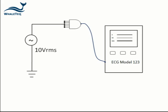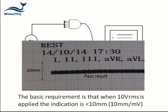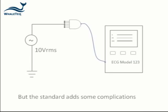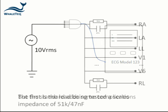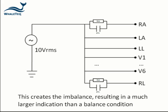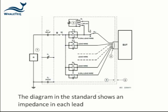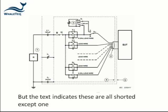The basic requirement is that when 10 volts RMS is applied, the equipment should indicate less than 10 mm with a normal sensitivity of 10 mm per mV. But the standard adds some complications. The first is that the lead electrode being tested must have a series impedance of 51k and 47 nF. This creates the imbalance and causes a much larger indication than the balanced condition. This impedance also appears in the right leg, although the effect of this is usually negligible. The diagram in the standard shows an impedance with a switch in each electrode, but the text indicates that all switches are shorted except for one.